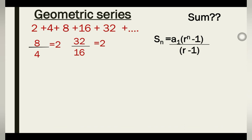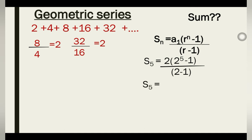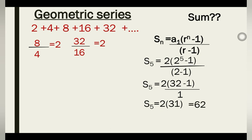S₅ = 2 × (2^5 − 1) / (2 − 1). Now 2^5 = 32, so we get 2 × (32 − 1) / 1 = 2 × 31 = 62. Therefore S₅ = 62, which is the sum of the first five terms of this series.